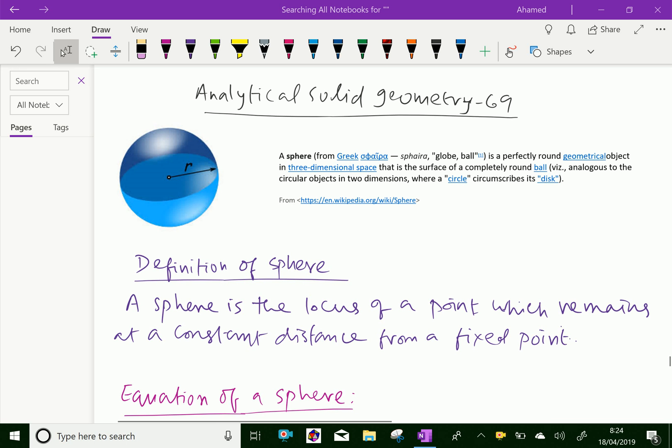Welcome to aminacademy.com. In analytical solid geometry, let us discuss about some introduction of sphere. Here, sphere from Greek speria is perfectly round geometrical object in three dimensional space. That is the surface of completely round ball. Look at this figure. However, this figure indicates the sphere of radius R.